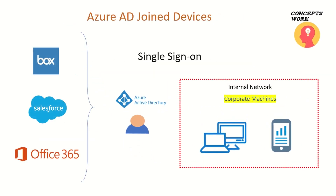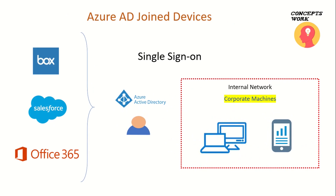Azure AD joined devices can be applied to your corporate machines in scenarios where you are a cloud-only organization — meaning you don't have any on-premises environment and you are joining Windows machines directly to Azure Active Directory to provide them to your users. Since there's no on-prem environment, you cannot domain-join the machine, so you Azure AD join it to provide single sign-on to all applications protected by Azure Active Directory. But this option is not limited to corporate devices — it also applies to bring-your-own-device, meaning personal devices as well.